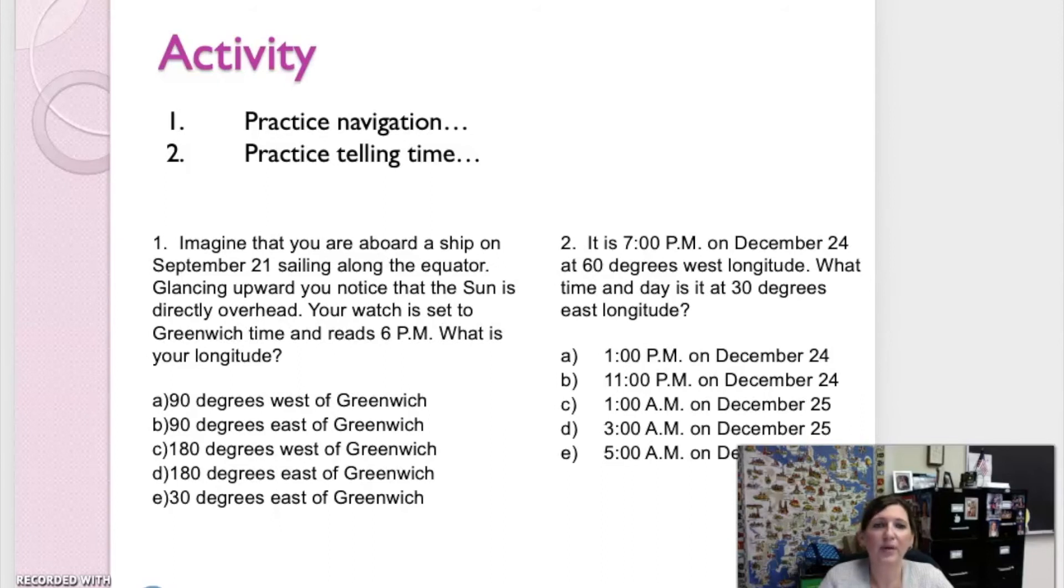Number two, it is 7 p.m. on December 24th at 60 degrees west longitude. What time and day is it at 30 degrees east longitude? Pause the video. The answer is C. It is 1 a.m. on December 25th. In this case, we would be adding six hours, one for each 15 degrees to come to the answer of 1 a.m. on December 25th.